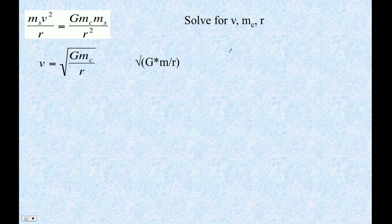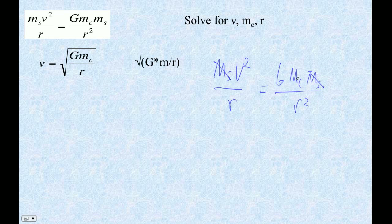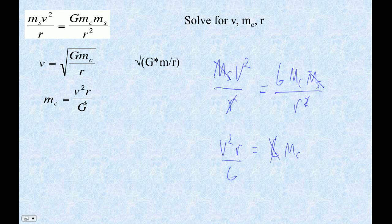Now let's solve for the central body mass Mc. We start with Ms·V² over R equals G·Mc·Ms over R squared. The satellite mass cancels. Multiply both sides by R, then multiply both sides by R again, giving V²·R equals G·Mc. Divide both sides by G, and you get Mc equals V squared times R over G. To type this into the calculator: V squared — you don't need parentheses to square scientific notation — times R, divided by G.